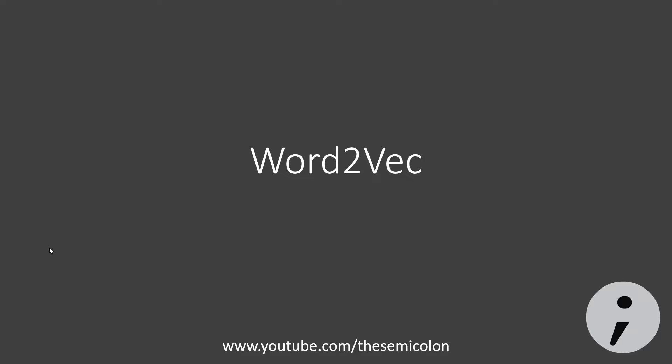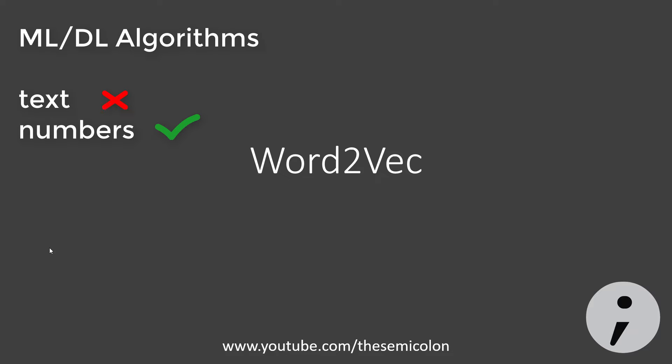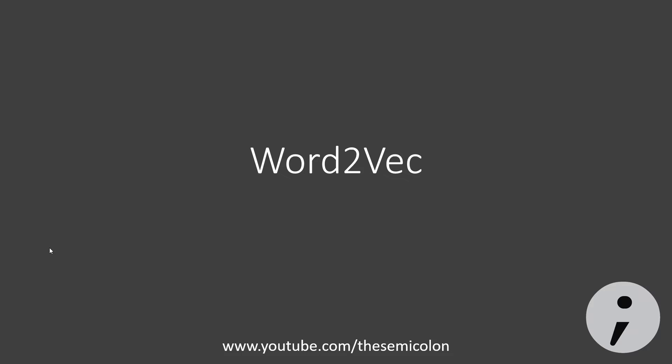Machine learning and deep learning algorithms cannot accept text directly. We need some sort of numerical representation so that the algorithms can process the data. In simple machine learning applications we use CountVectorizer or TF-IDF, both of which do not preserve any relationship between the words. This is where word embeddings come in.